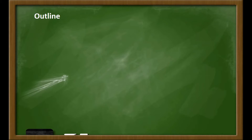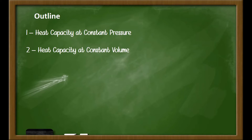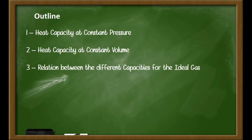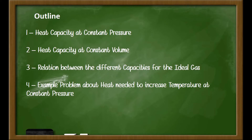This is the outline for today's class. First, we are going to study the heat capacity at constant pressure. Second, we are going to study heat capacity at constant volume. Third, we are going to see the relation between the different heat capacities, mainly for the case of the ideal gas. And finally, we are going to work together in an example problem about the heat needed to increase the temperature at constant pressure.